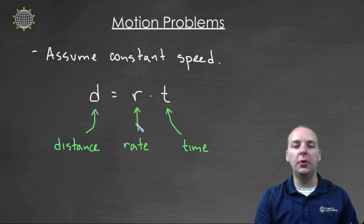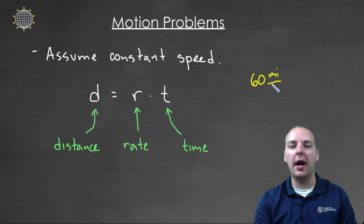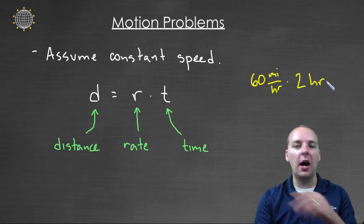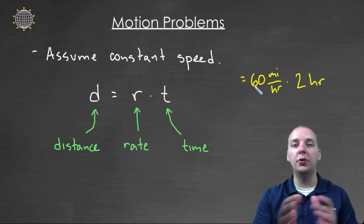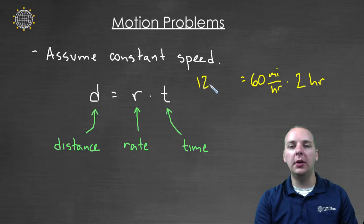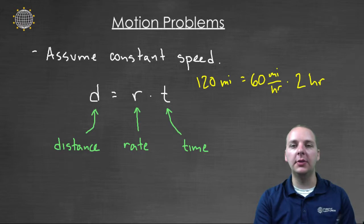Commit this to memory because everything dealing with these motion problems revolves around this single formula. And this formula is somewhat intuitive. I mean if you think about it, just common sense. If we got in our car and we went sixty miles per hour, that's how fast we went, and we traveled sixty miles per hour for two hours at a constant speed, then how far did we go? Sixty miles per hour for two hours, we would have gone one hundred and twenty miles.